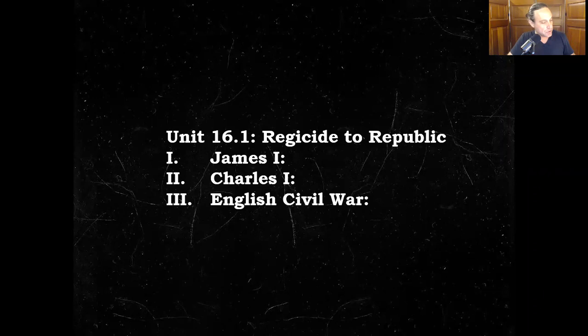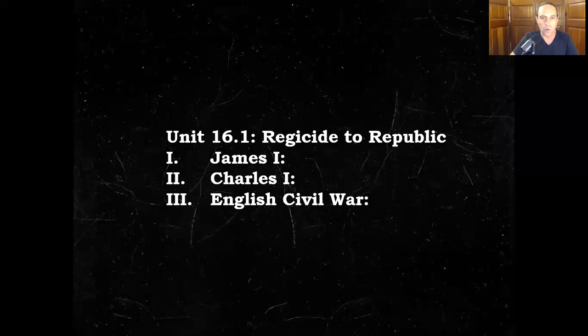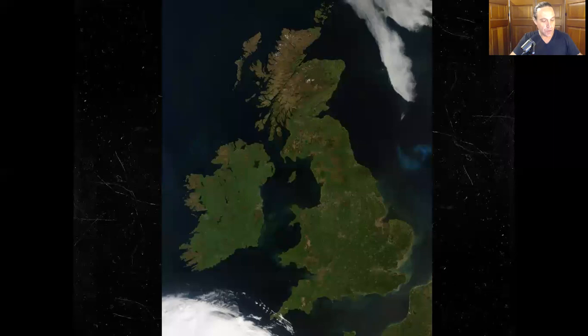Hello, beautiful people. Today we're going to look at Unit 16.1, Regicide to Republic. We will look at King James I, his son King Charles I, and we will look at the English Civil War. Let us travel to Northwestern Europe, to the British Isles,